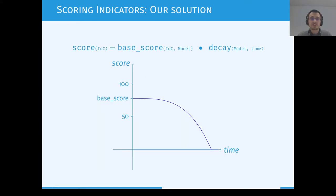This is how it looks graphically. On the y-axis you have the score of an IOC, and on the x-axis you have the time. The curve shows the score over time. At the beginning, when the time is at zero, the score is equal to the base score, and then over time this score will be decreased depending on how the decay expresses the decay speed.